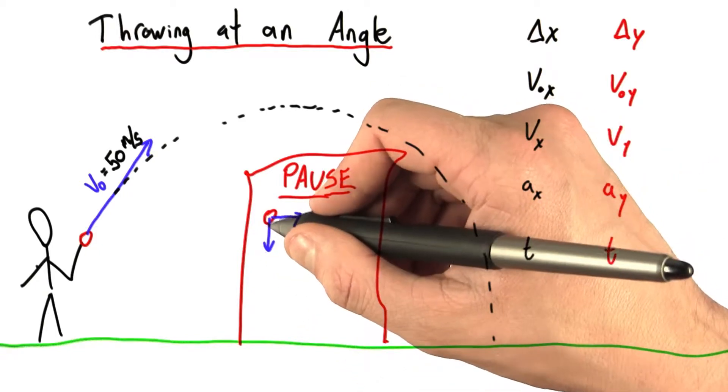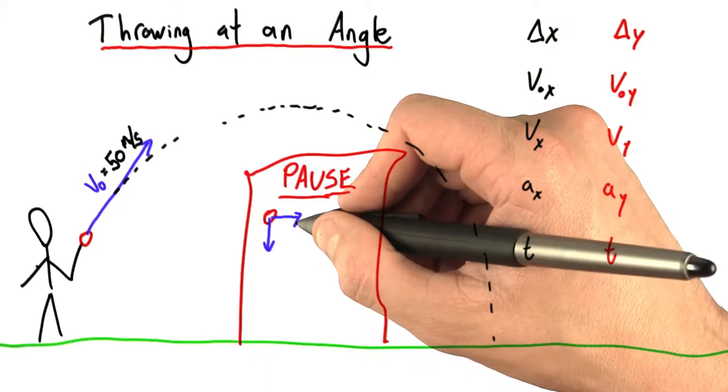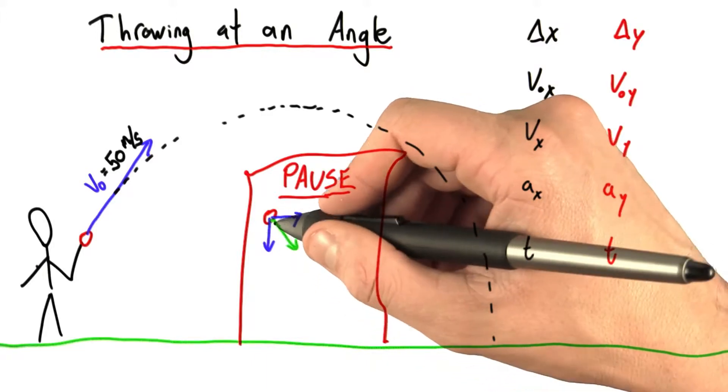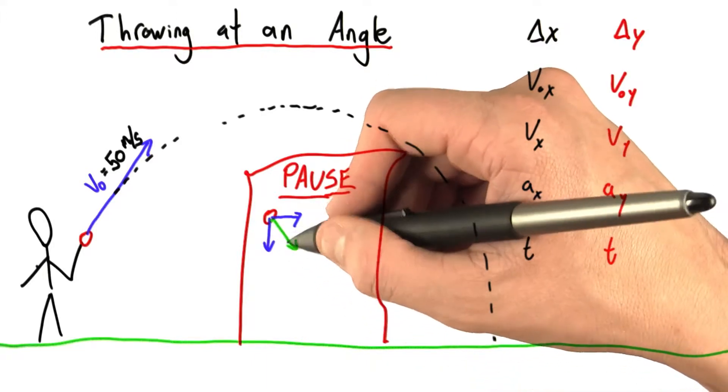Remember how we talked about a ball with vertical and horizontal velocity components? Well, these components were just a way of thinking about the true velocity, which was off at some angle.